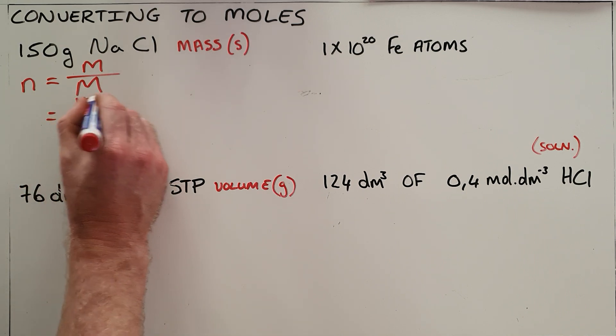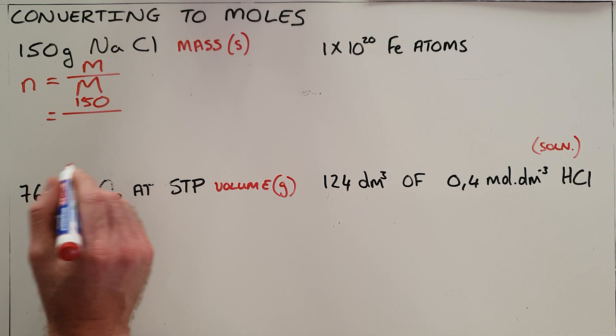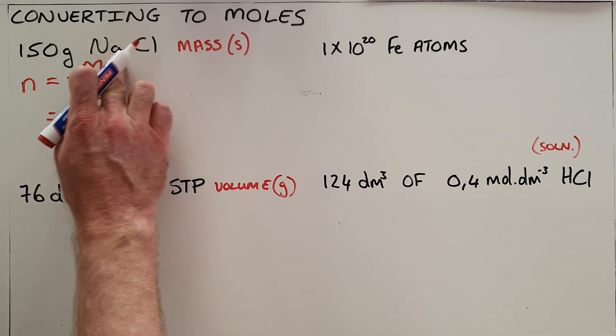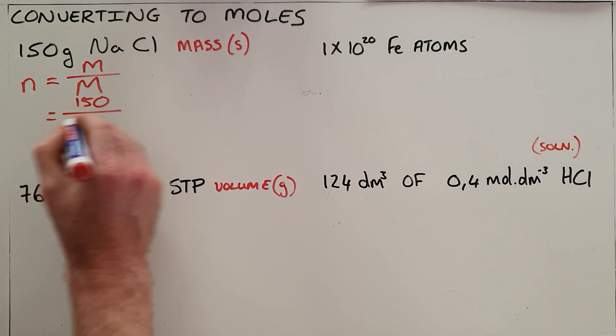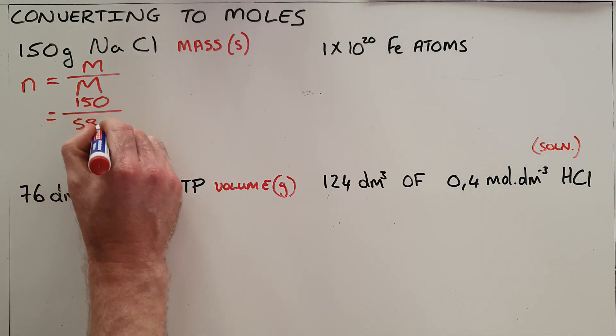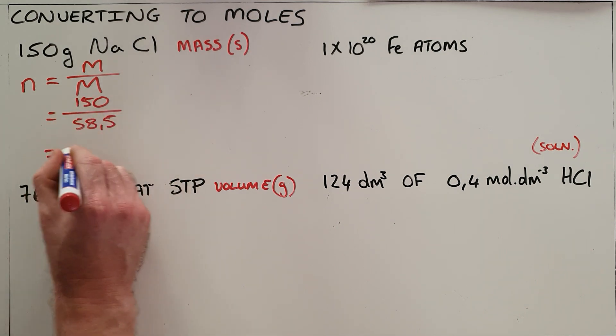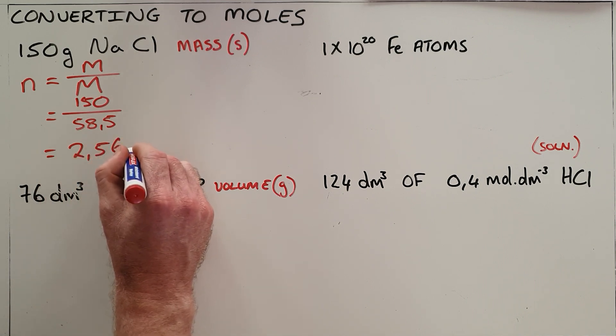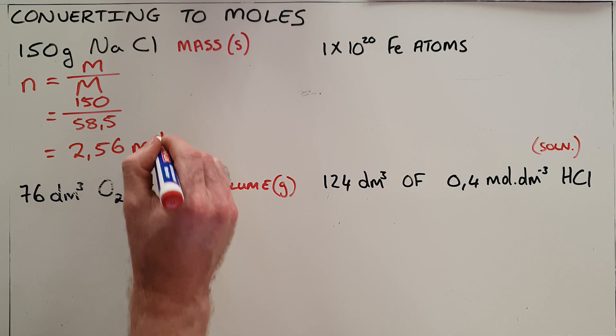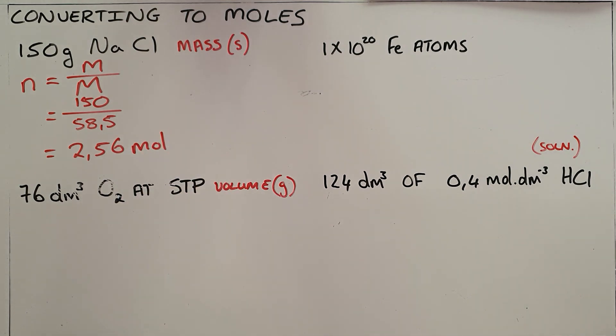In this case, the mass was given as 150 grams. The molar mass we can calculate as the sum of the molar mass of sodium plus that of chlorine, which is 58.5 in total. This means that 150 grams of sodium chloride is exactly 2.56 moles of sodium chloride.